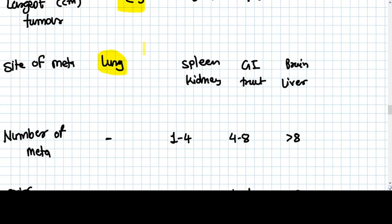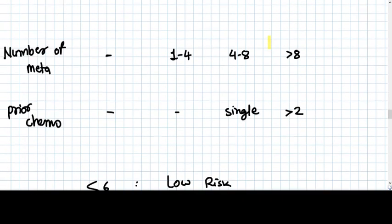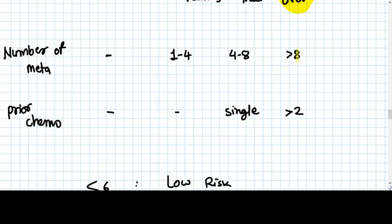Site of metastasis: if it is confined to lung, which is 80%, then it is still a lower risk case. But if it has metastasis to brain or liver, then it is a poor prognosis case. Number of metastasis: if more than eight, very high risk. If one to four, only one score is given. Even if there are four metastases, it is not very high risk because the prognosis is very good in choriocarcinoma.